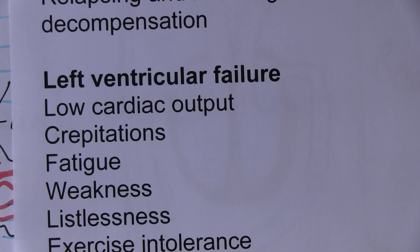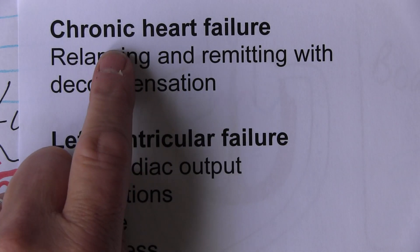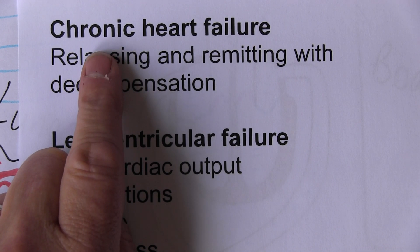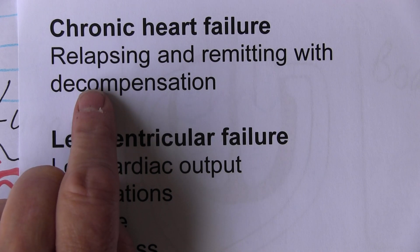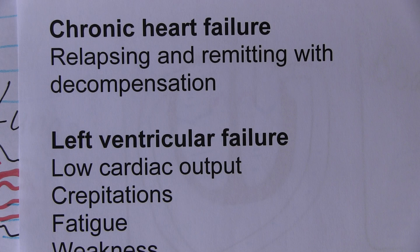Now thinking about chronic heart failure. Chronic just means the condition is established, it's been going on for a while. Chronic is the converse of acute.